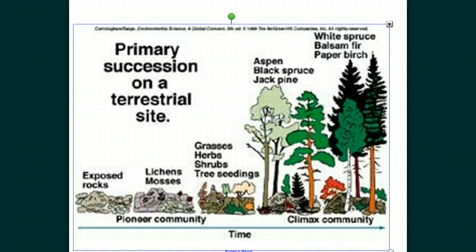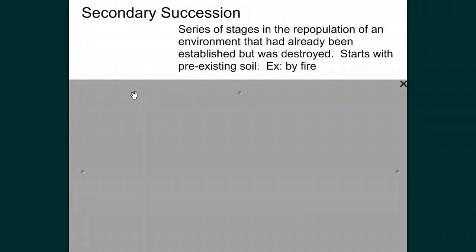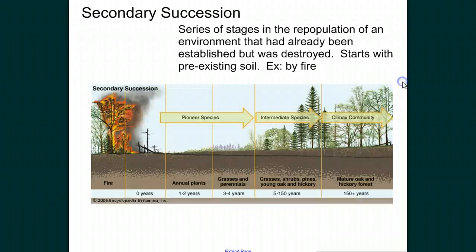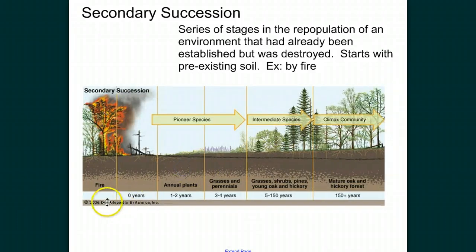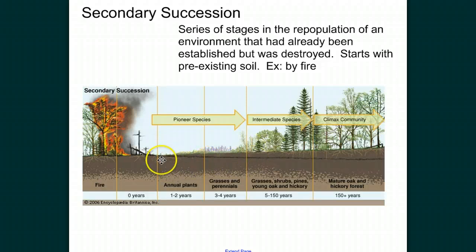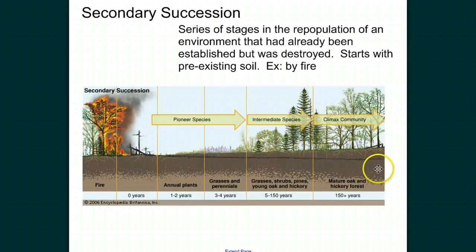So if that's primary succession, what's secondary succession? Secondary succession is a series of stages in the repopulation of an environment that had already been established but was destroyed — starting with pre-existing soil. For example, if a forest fire wipes out an area, secondary succession takes many fewer years than primary succession. We don't start with lichens and moss; we start with very opportunistic small shrubs, seed plants, and grasses that repopulate and prepare the environment for the next level of species — going from pioneer species to intermediate to climax community. This can happen over zero to 150 years, whereas primary succession would take many more years.